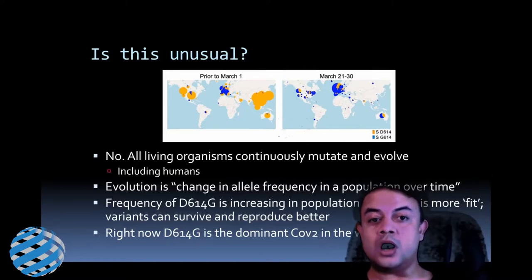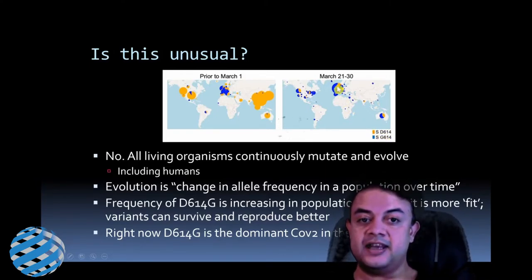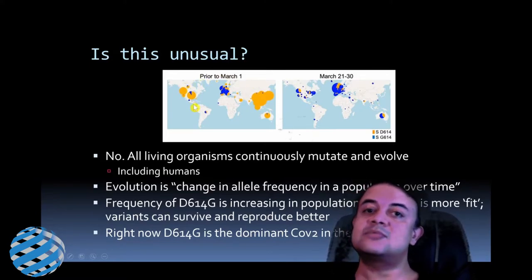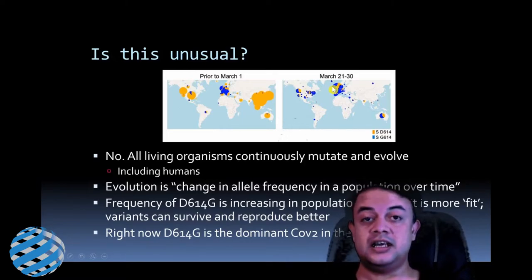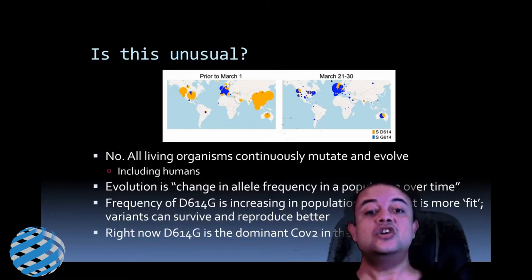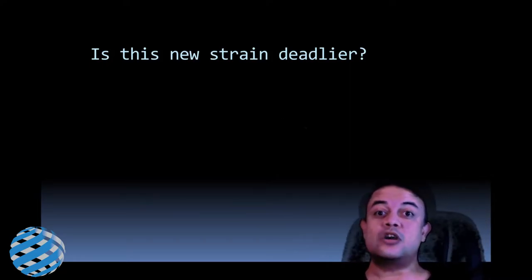The virus can spread from one person to another much more easily because of this mutation — variants that survive and reproduce better increase in frequency. Prior to March 1, the D variant was very common, but from around March 21–30 onwards, the G variant became very common around the world. Right now, d614g is the dominant SARS-CoV-2 strain in the world.